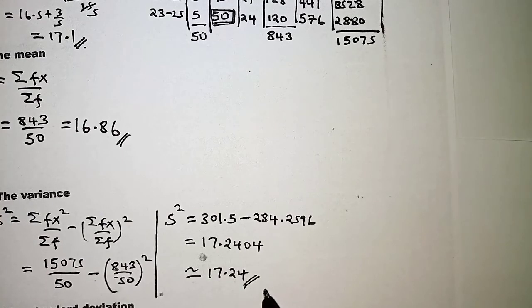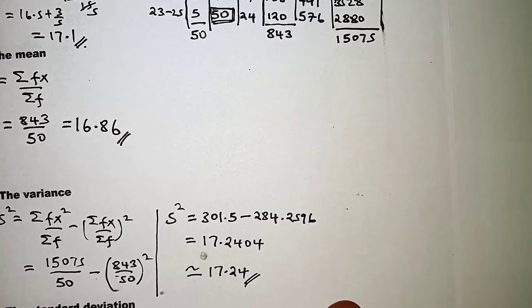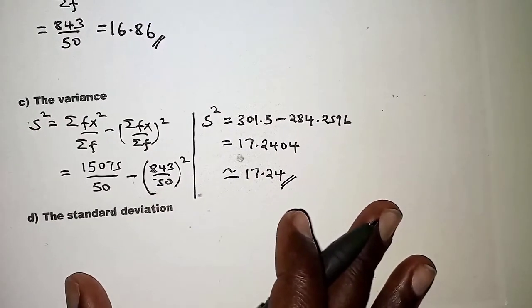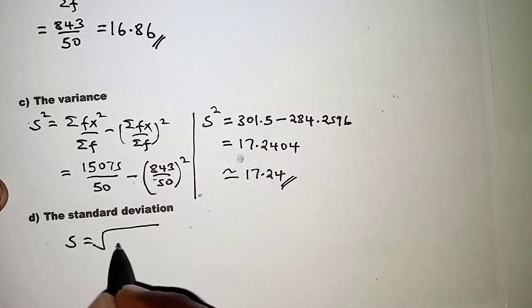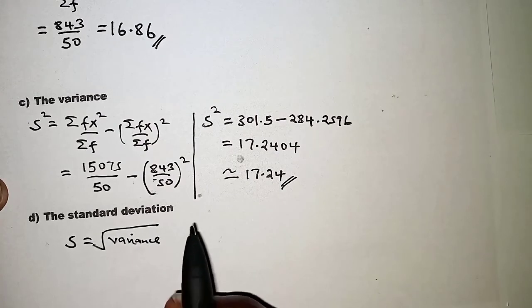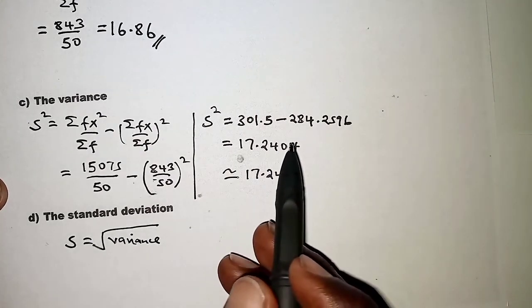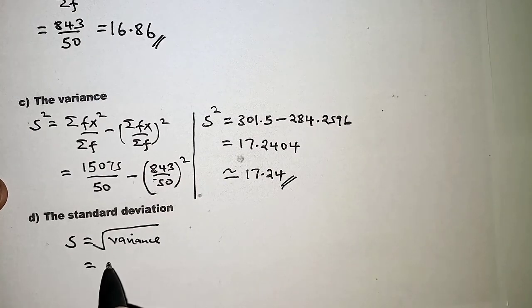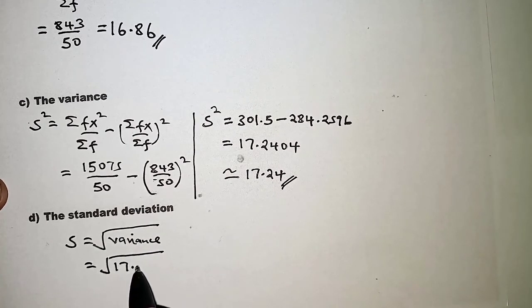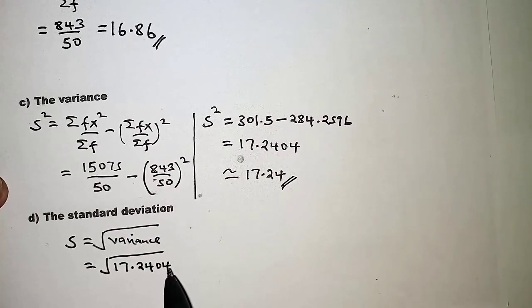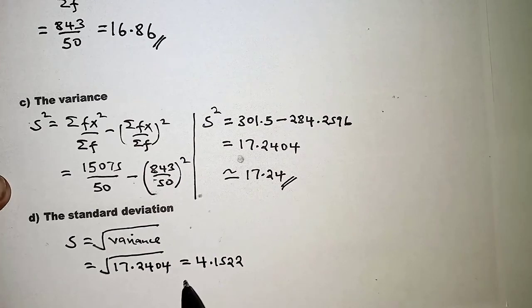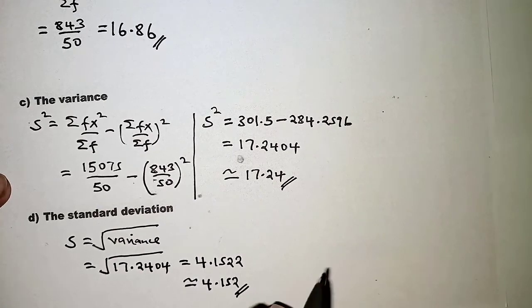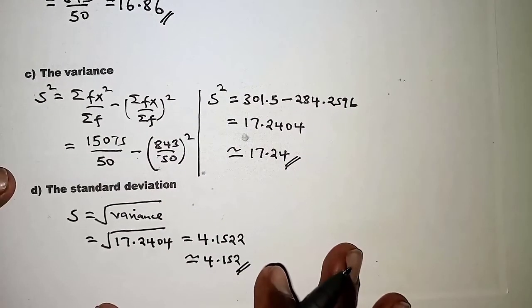Finally, the standard deviation is simply the square root of the variance. We take the square root of 17.2404, which gives approximately 4.152 to four significant figures. That concludes the question.